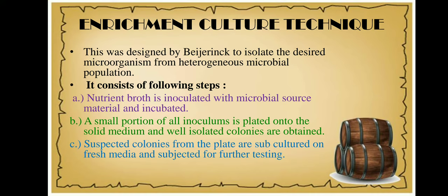I will prepare nutrient broth with cellulose powder in it, and then I will inoculate this nutrient broth with soil organisms. After incubation, we can see that in the nutrient broth containing cellulose powder there are a lot of organisms growing.